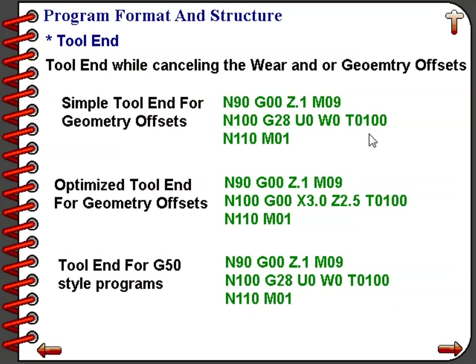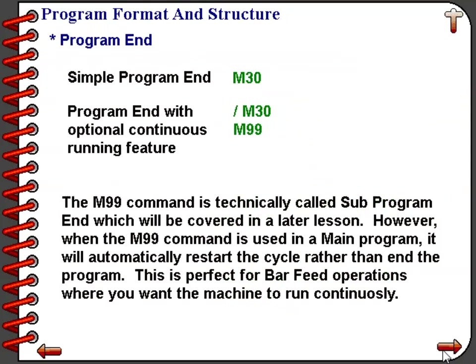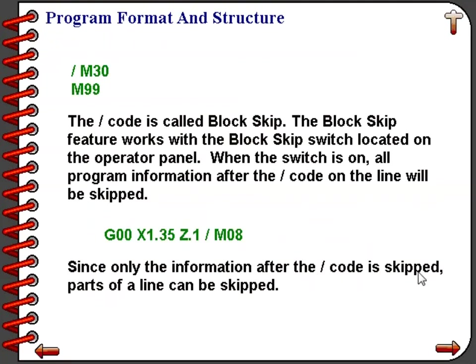Depending on how your machine is configured through parameters, you may or may not need to cancel your tool offsets. The program end portion is usually quite minimal — in this example, just an M30. This may at times be preceded with an M09 command turning off the coolant. Keep in mind, we can only have one M code per line, so M09 would be on the line before M30.